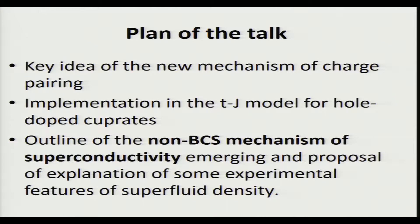The plan of the talk is the following. I first present the key idea of a new proposal for a mechanism of charge pairing in the cuprate. Then I show how I implement this idea in the TJ model for hole-doped cuprates. And then I outline the emerging non-BCS mechanism for superconductivity and the proposed explanation of some experimental features, in particular of superfluid density.